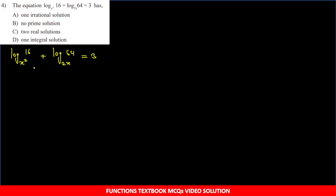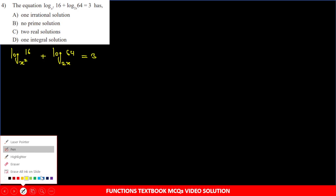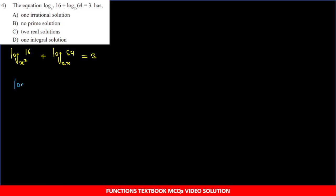Log ke andar ki values 16 aur 64 hain. 16 = 2⁴, 64 = 2⁶ - dono 2 ki power mein hain, so base 2 lena chahiye. Base change property: log B (base A) = log B / log A, kisi bhi base C ke saath. Numerator mein value ka log, denominator mein base ka log.